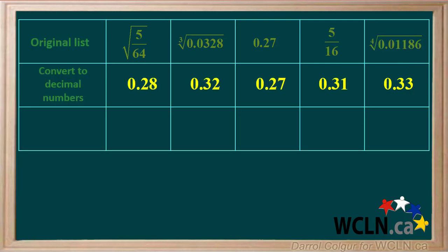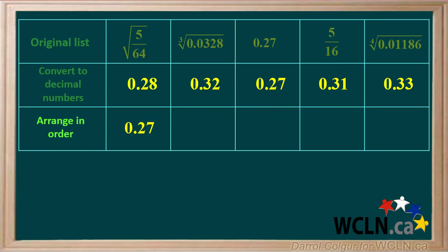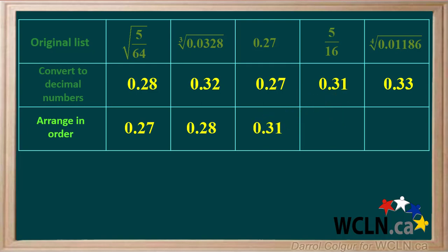Now that we have all these numbers in decimal format, we need to arrange them in order. The smallest one is 0.27, so that will go in the first box. Slightly higher than 0.27 is 0.28, so that will go into the second box. The next highest is 0.31, so that will move to the third box. The next higher value is 0.32, which will move to the fourth box. And the largest value is 0.33, so that will be in the last box.